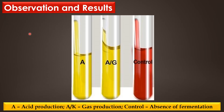Observation and result. Tube A shows acid production — acid production changes the medium into yellow color, as organisms ferment the given carbohydrates and produce organic acids, thereby reducing the pH of the medium to acidic. Tube A-G shows acid and gas production — the acid and gas production changes the medium into yellow color, as organisms ferment the carbohydrates and produce organic acids and gas. Gas production can be detected by the presence of small bubbles in the inverted Durham's tube.